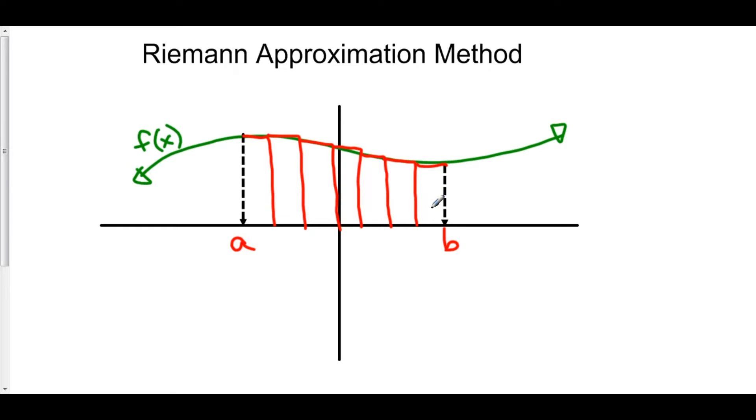We call these partitions. And really partitions just means a new rectangle. So we have seven different rectangles or seven partitions.